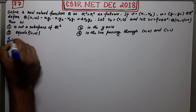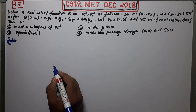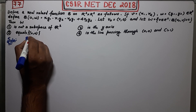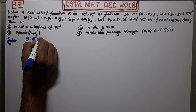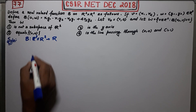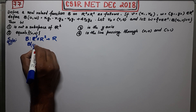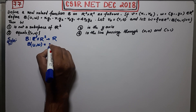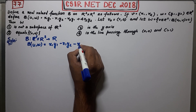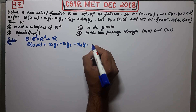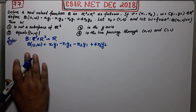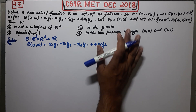The first aim is to find W. So b is a function from R² cross R² to R, and it is defined by: b(u, w) = x₁y₁ − x₁y₂ − x₂y₁ + 4x₂y₂. This is your b function.